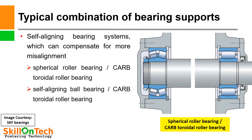Here you can see a spherical roller bearing paired with a CARB toroidal roller bearing — the spherical roller bearing acts as the locating bearing and the CARB toroidal roller bearing acts as the non-locating bearing, providing axial displacement. This is a self-aligning bearing system which can compensate for more misalignments. Self-aligning ball bearings or CARB toroidal roller bearings are used in this configuration.